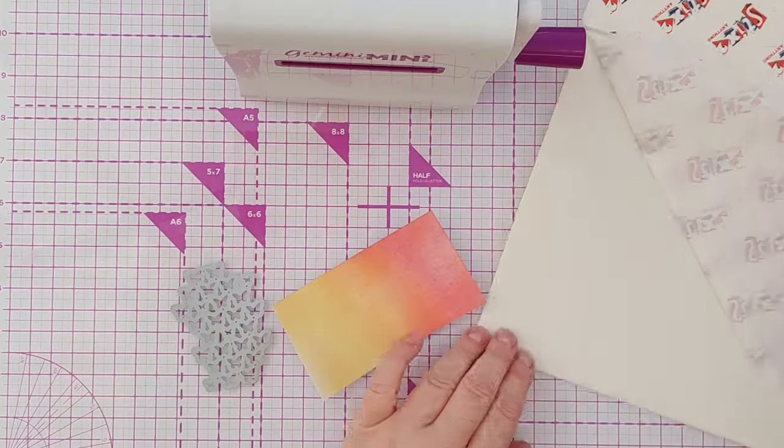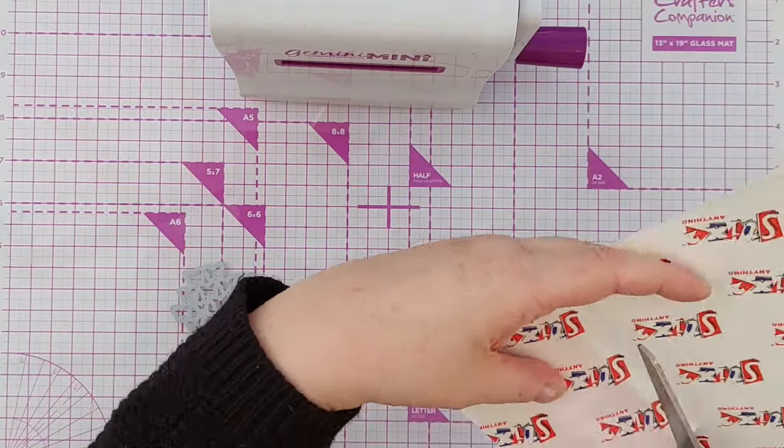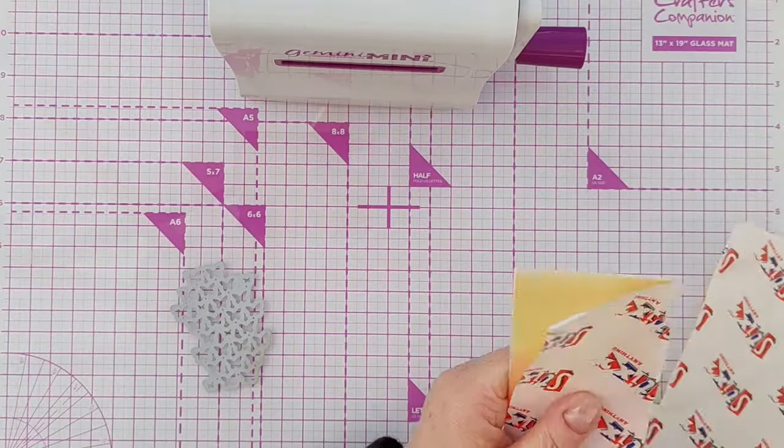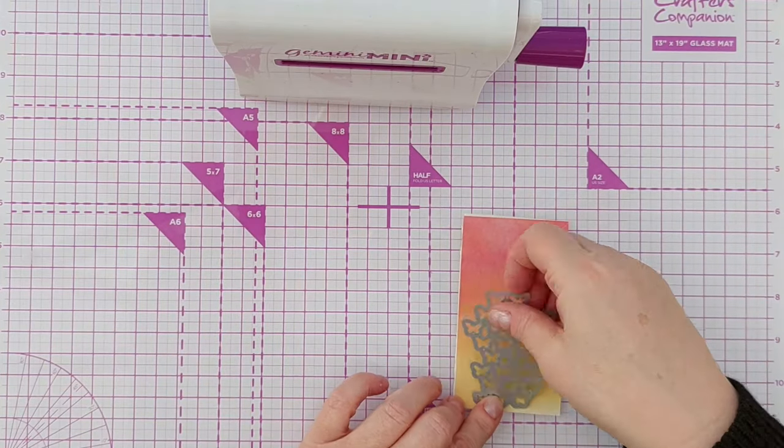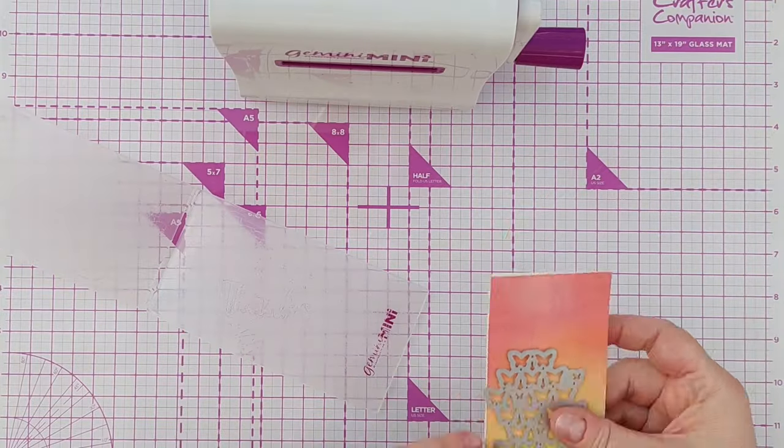Before I did the die cutting I stuck my bit of card down onto some double-sided sticky foam and then I ran that through my die cutting machine a couple of times to cut as many butterflies out as possible.